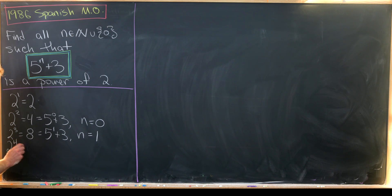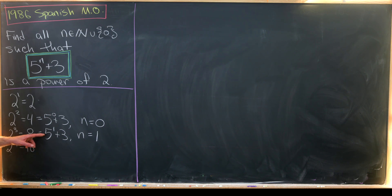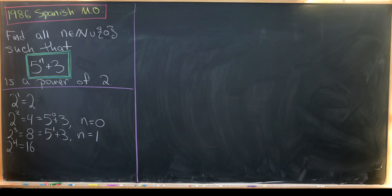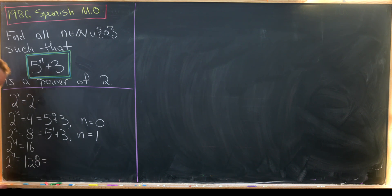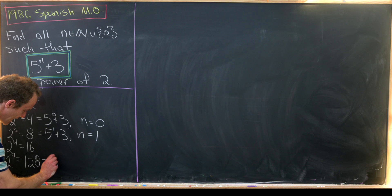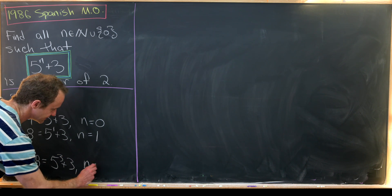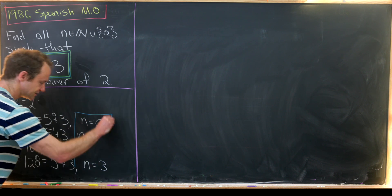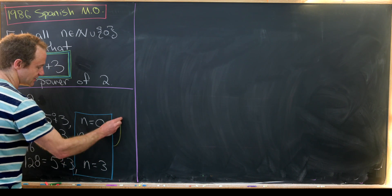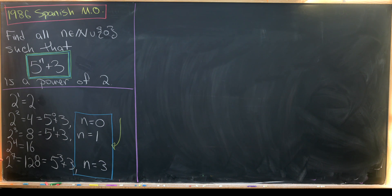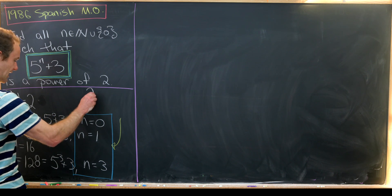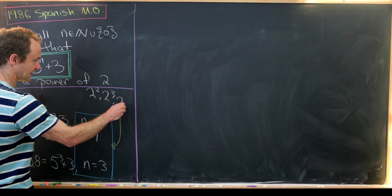Now two to the four is 16 — this does not give us a solution. We would need five to the one, but 16 is five to one plus 11, so that doesn't work. Two to the five and two to the six don't work either, but two to the seven does. Two to the seven is 128, which is 125 plus three, which is five cubed plus three. So that gives us a solution of n equals three. So we have three solutions: n equals zero, one, and three, corresponding to two squared, two cubed, and two to the seventh.